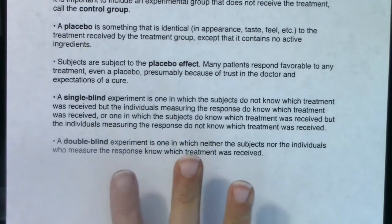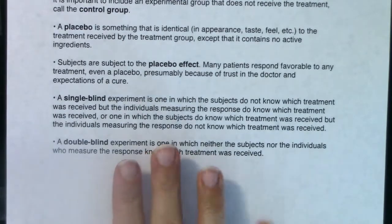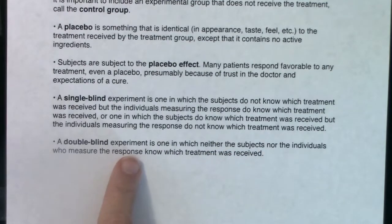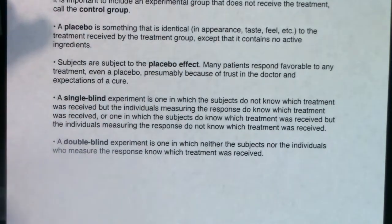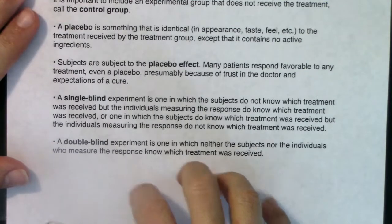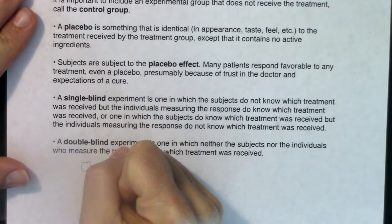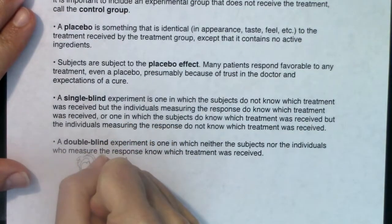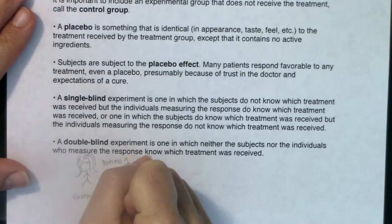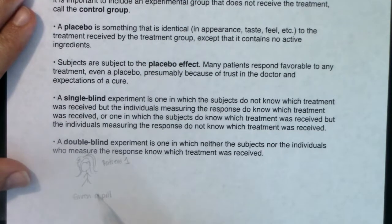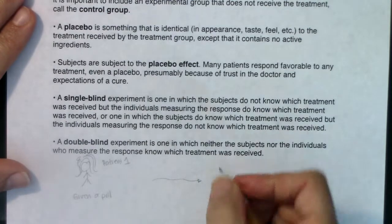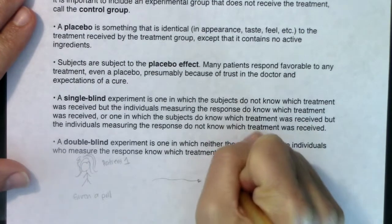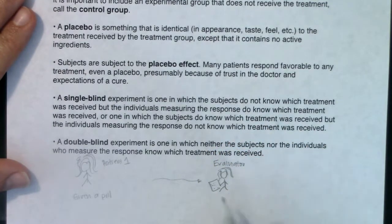If you can double blind, that's the best case scenario — it removes as much bias as humanly possible. In a double blind experiment, neither the subjects nor the individuals who measure the response know which treatment was received. For example, testing a new aspirin: you are patient one and you are given a pill. You don't know if this pill is the actual new aspirin treatment or a placebo, and you go to some kind of evaluator.